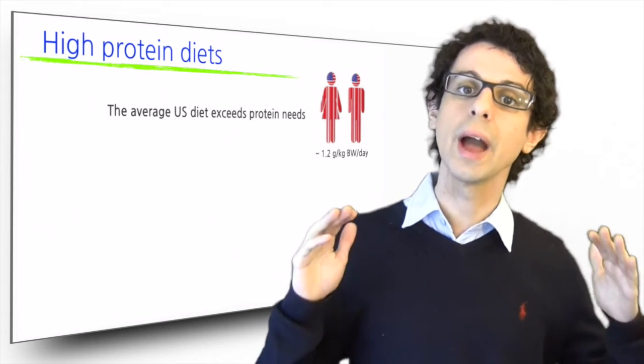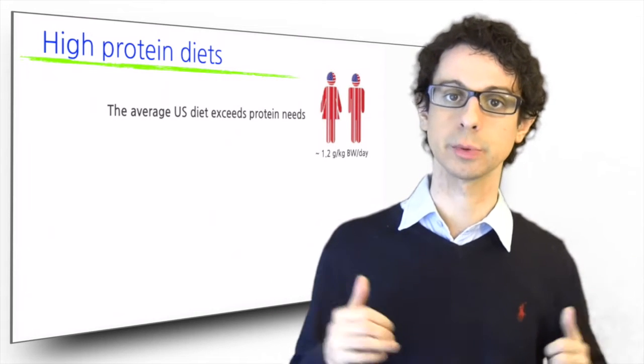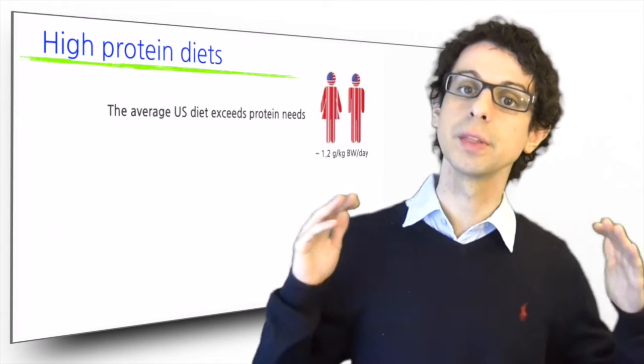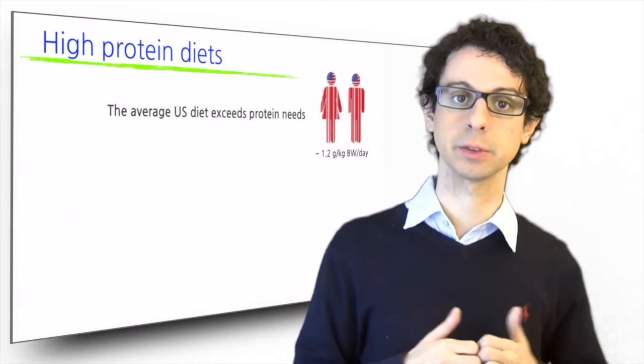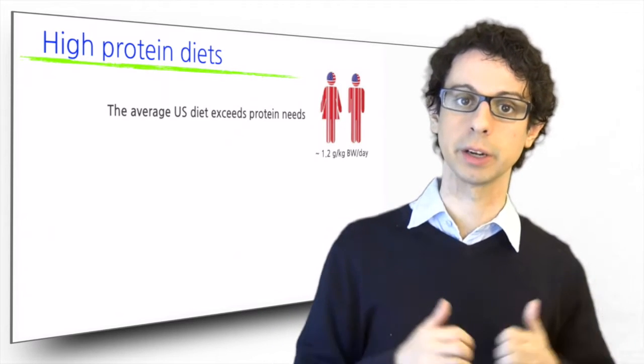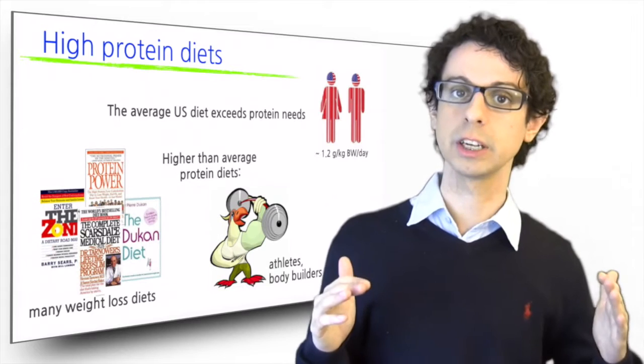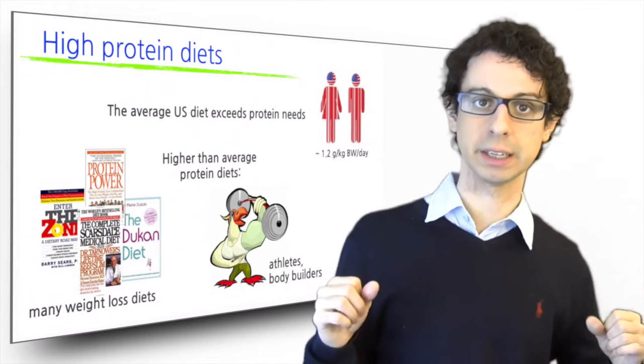We refer to way higher protein intakes, over 2 grams of proteins per kilo per day, often 3 grams and even 4 grams of daily proteins per kilo of body weight. There are mainly two segments of the population that may have such high protein intakes.